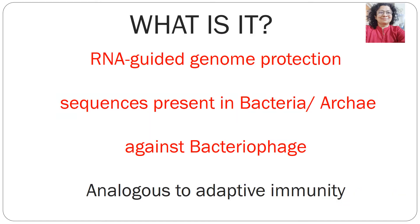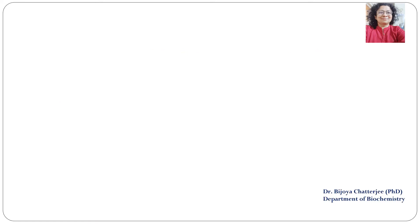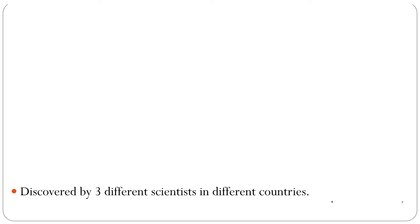Basically, CRISPR is an RNA-guided genome protection sequence present in bacteria and archaea against a bacteriophage. A bacteriophage is a virus, and so this whole RNA-guided genome protection system is analogous to the adaptive immunity that is present in us.